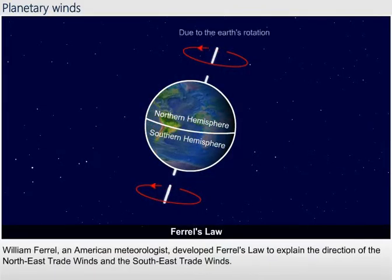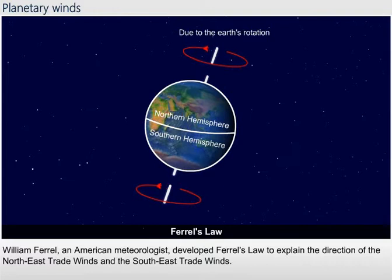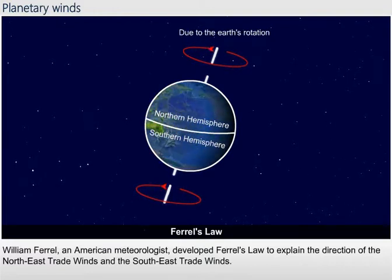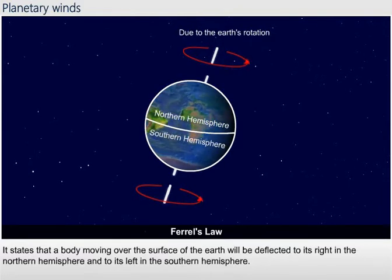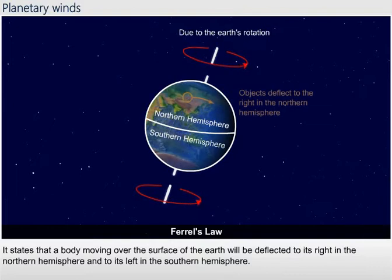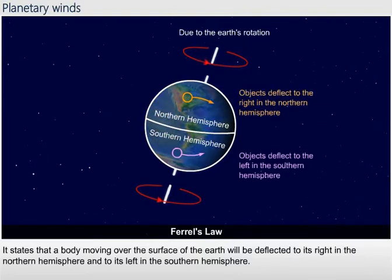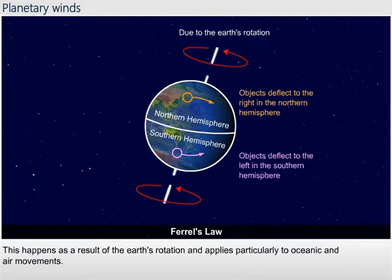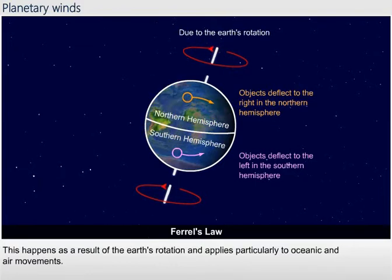William Ferrell, an American meteorologist, developed Ferrell's Law to explain the direction of the northeast and southeast trade winds. It states that a body moving over the surface of the earth will be deflected to its right in the northern hemisphere and to its left in the southern hemisphere. This happens as a result of the earth's rotation and applies particularly to oceanic and air movements.